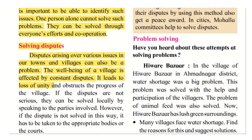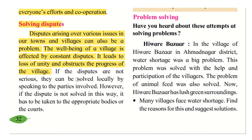Constant disputes lead to a loss of unity and obstruct the progress of the village. If there is a dispute between a few people, some are not talking to each other, some are fighting — it obstructs the harmony and progress. The whole village is like one big family, so all have to work in harmony. Disputes obstruct the harmony and progress of the people of the village, and the village cannot progress at large.